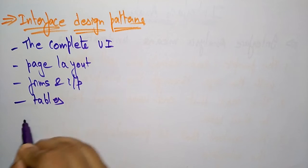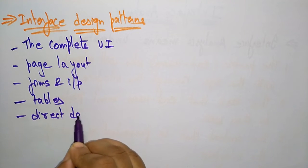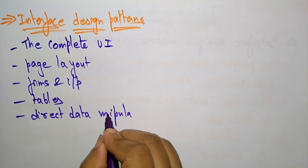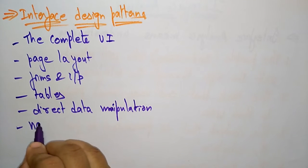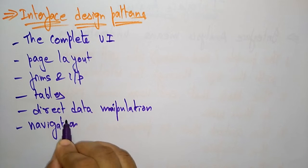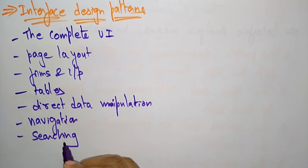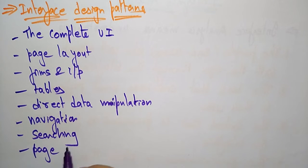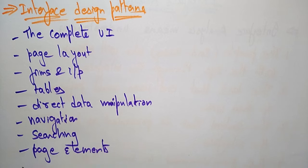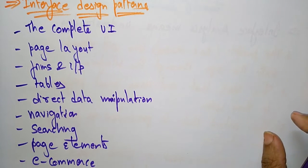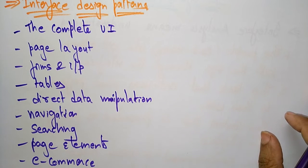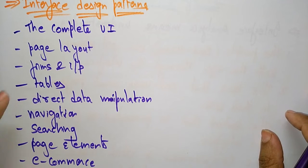Additional patterns available include: tables, direct data manipulations, navigation (already implemented), searching (code is already there), page elements, and e-commerce. These are the different patterns available for interface design covering the complete user interface, page layout, forms and inputs, tables, direct data manipulation, navigation, searching, page elements, and e-commerce.